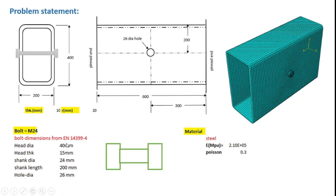The dimensions of the bolt are shown here. The head has a dimension of 40 mm by 15 mm thick, and the shank length will be 200 mm. This ensures it is a through-bolt which passes through the section. Accordingly, the shank length equals 200 mm and the hole diameter will be 26 mm. We will use a single material — steel — with an E-value of 2.1×10⁵ N/mm² and a Poisson's ratio of 0.3, and we shall perform only an elastic analysis.